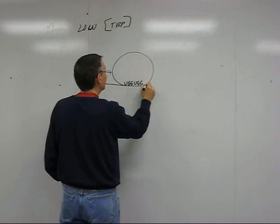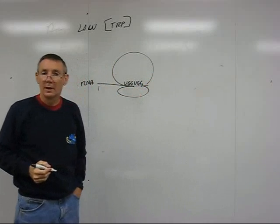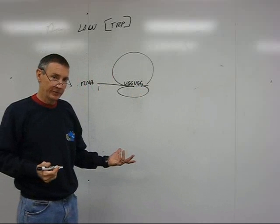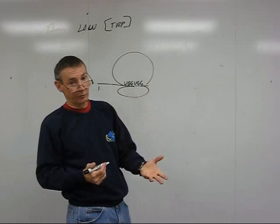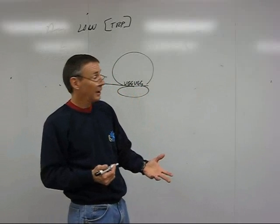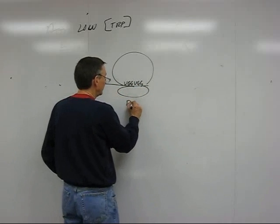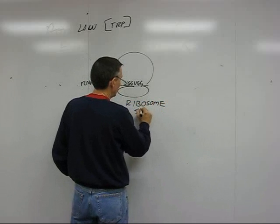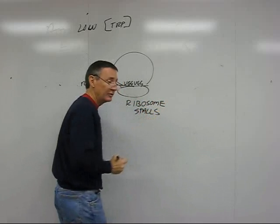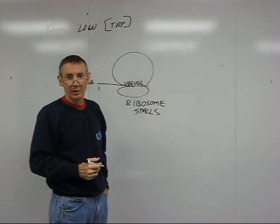And the ribosome gets to those, and now there's very little tryptophan available in the cell. So there aren't very many tryptophan transfer RNAs with tryptophan on them available. And as a result, the ribosome takes time to get through here.